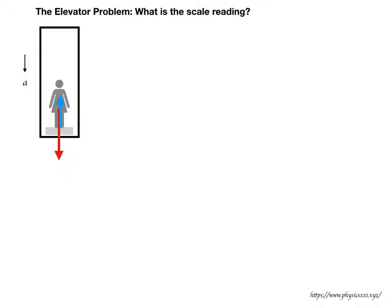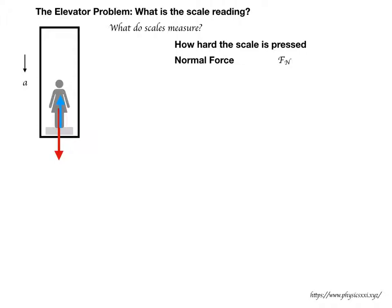Before we get to the actual solution of the problem, it's very important to understand what the scale really measures. While we're used to thinking that the scale will measure our mass, in reality the scale really measures how hard our feet are pressed against the ground or the floor — or in this case, since the person is sitting on the scale, the scale will read how hard the feet press against the scale itself. On our diagram, that interaction shows up as the normal force pushing back upwards onto the person, marked as F.